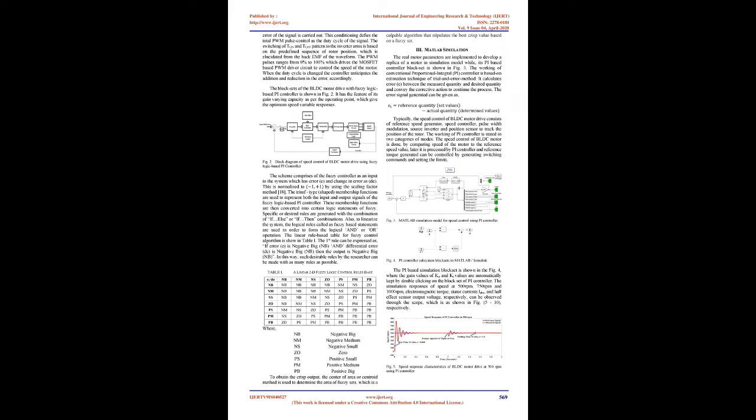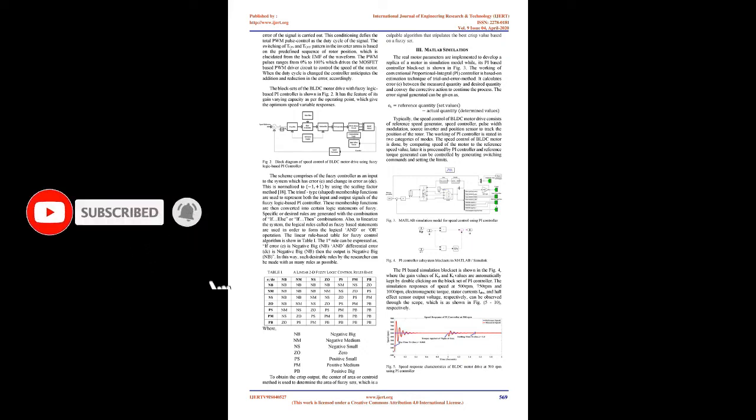The parameters of PI controller are the output variables used to solve the uncertain and indistinct predicament, in which conditioning and minimization of error in the signal is carried out. This conditioning defines the total PWM pulse control as the duty cycle of the signal. The switching of TON and TOFF patterns in the inverter arms is based on the predefined sequence of rotor position, elucidated from the back EMF waveform. The PWM pulses range from 0% to 100%, which drives the MOSFET-based PWM driver circuit to control the speed of the motor.